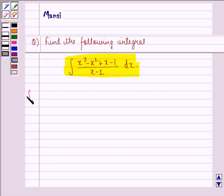So let us start with the solution to this question. We have to find the integral of x³ - x² + x - 1 divided by x - 1, dx.